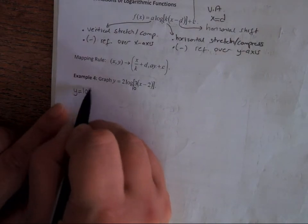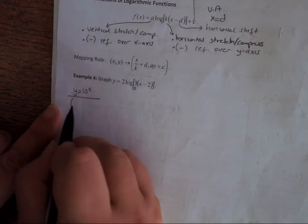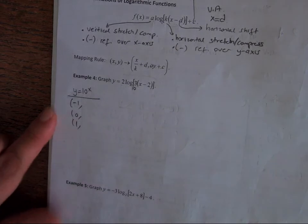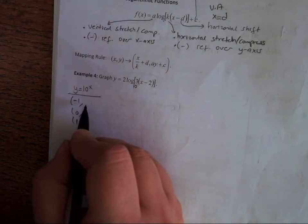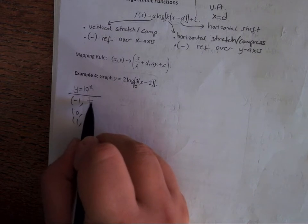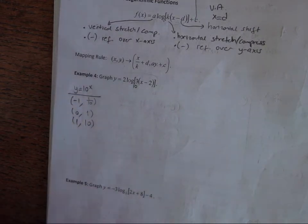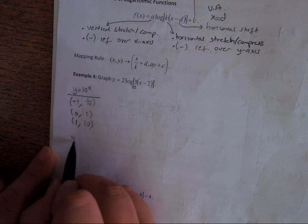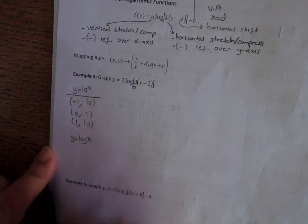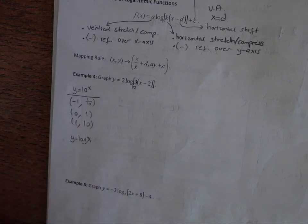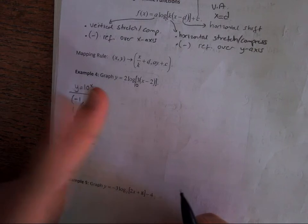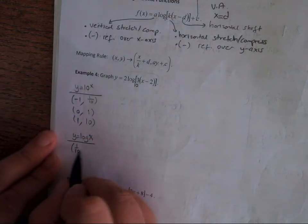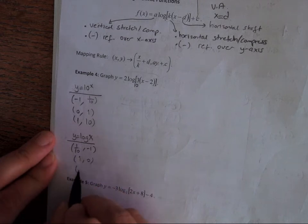Let's sketch y = 2·log(3x - 2). Since no base is written, the base is 10. We need three steps: get points from y = 10^x, then get points for the parent y = log x by switching coordinates, then apply the mapping rule. For y = 10^x with x = -1, 0, 1 we get y = 1/10, 1, 10. Switching gives points (1/10, -1), (1, 0), (10, 1) for y = log x.